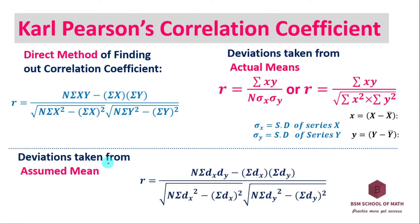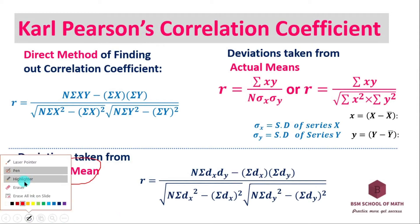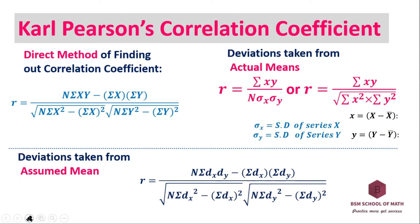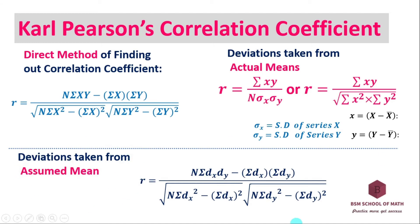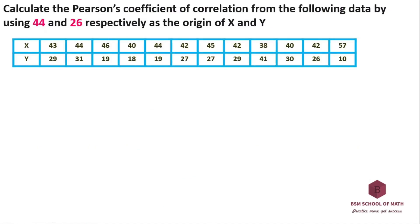Deviation taken from assumed mean. Assumed mean — sometimes questions are taken from assumed mean. This is the assumed mean method form. The assumed mean for X is 44.